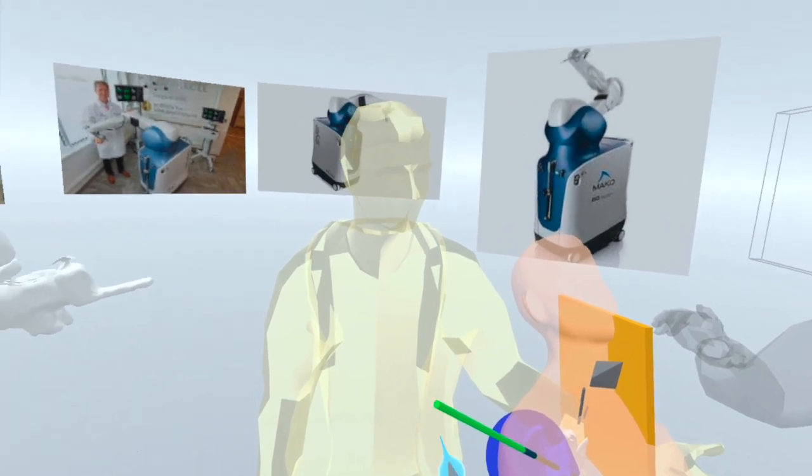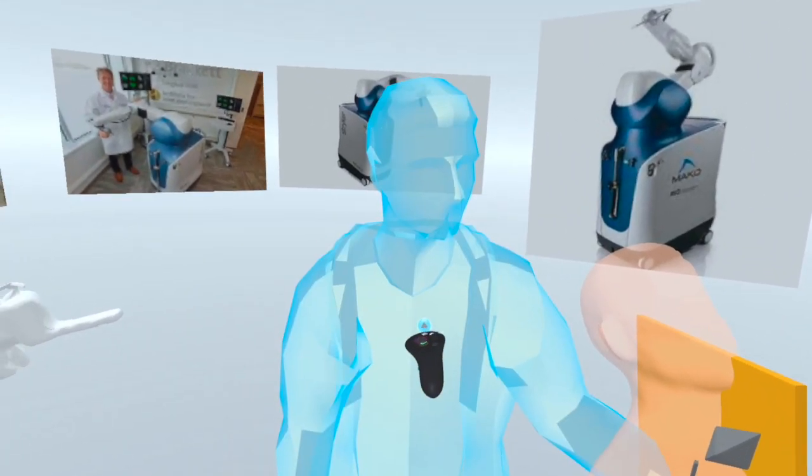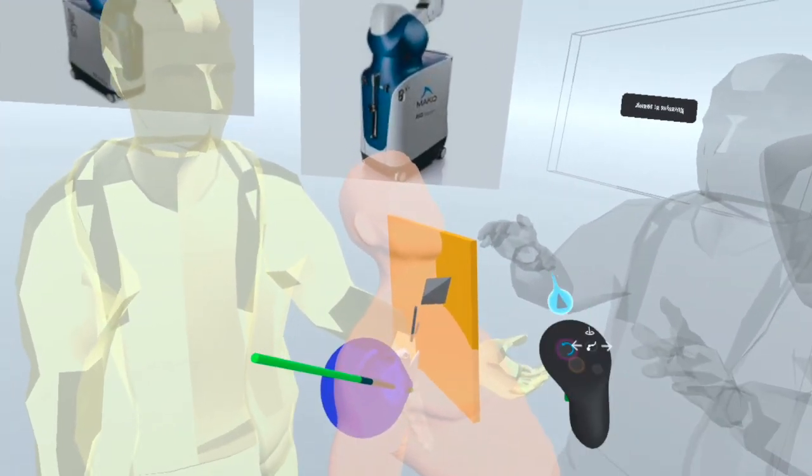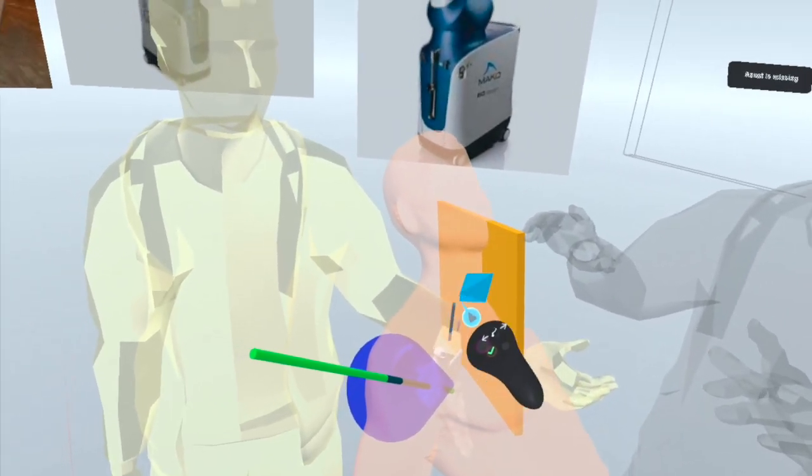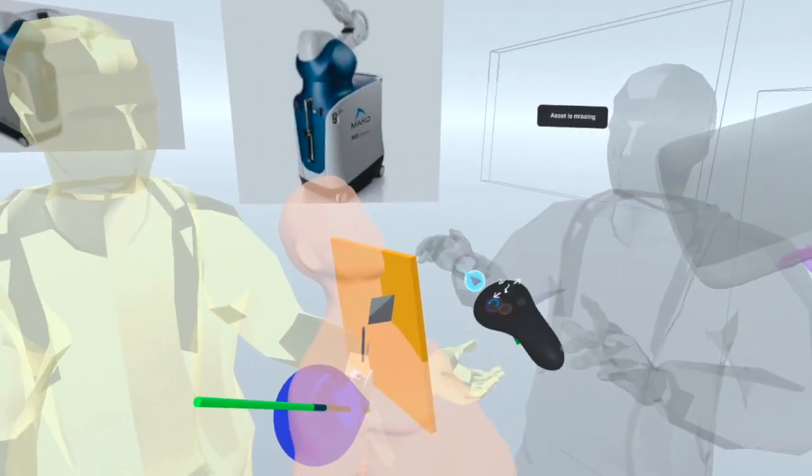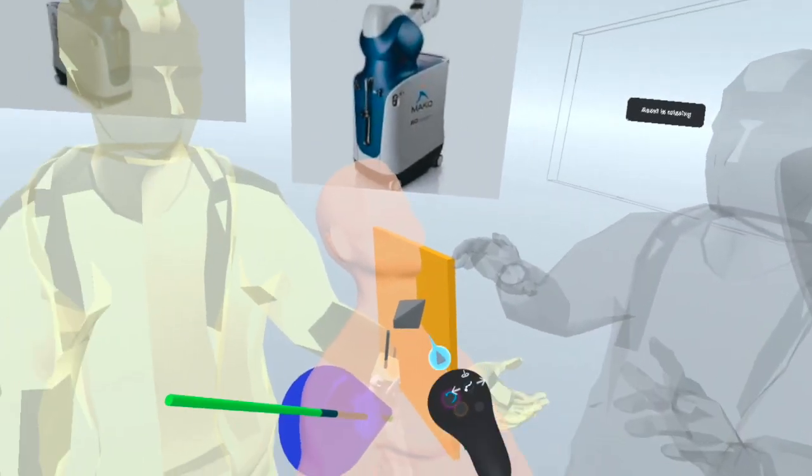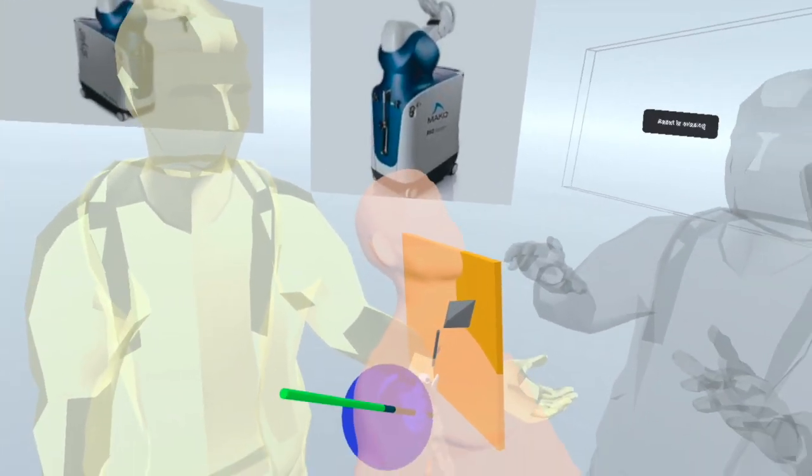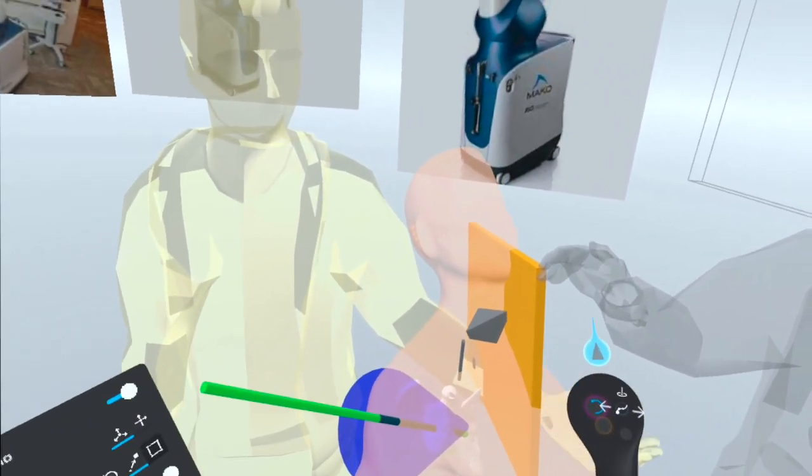We have here a patient in a beach chair position. We have the first doctor, the first auxiliary right here, and a second auxiliary right here. Here we have the tracker for the navigation system, so it has to have some vision for the navigation system.